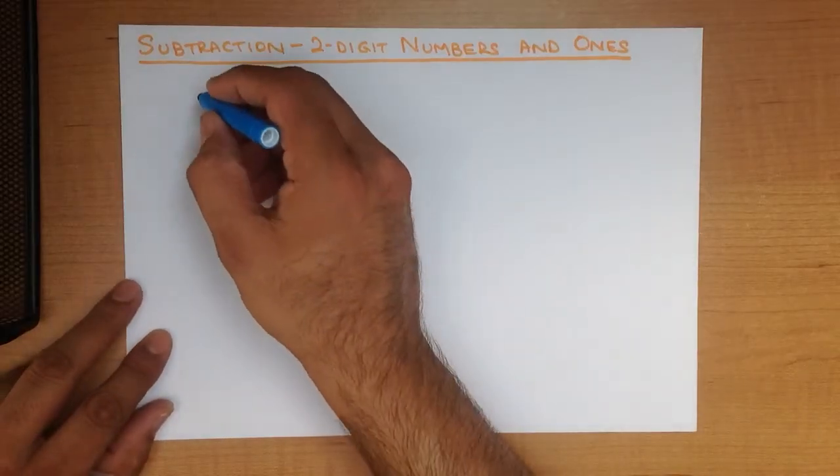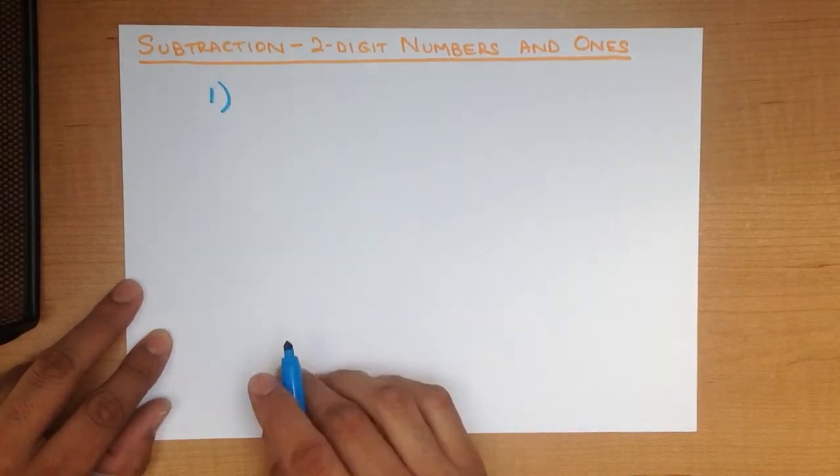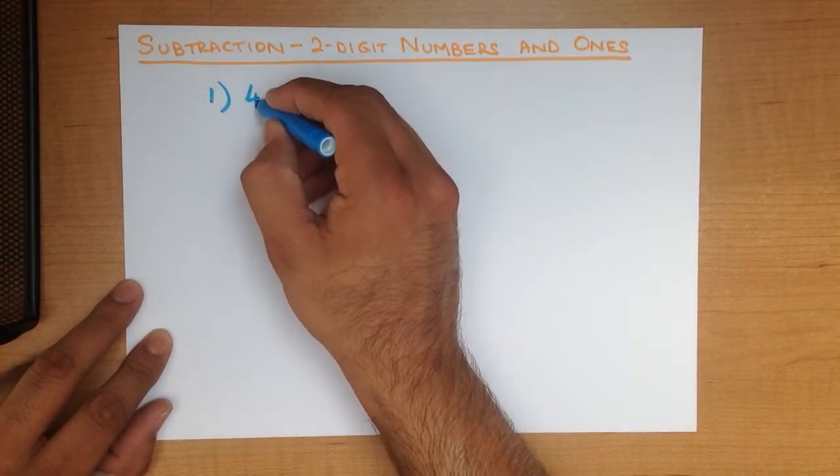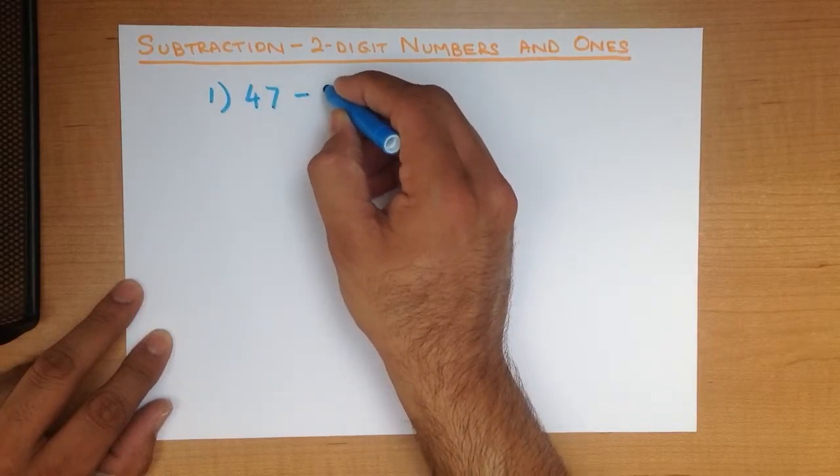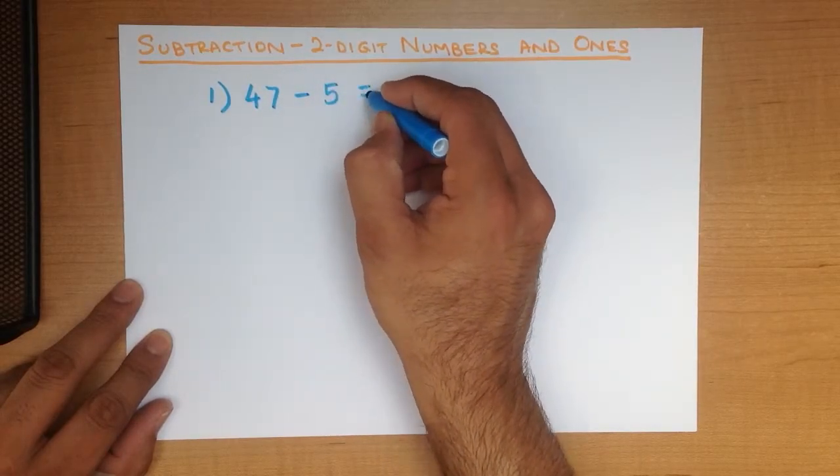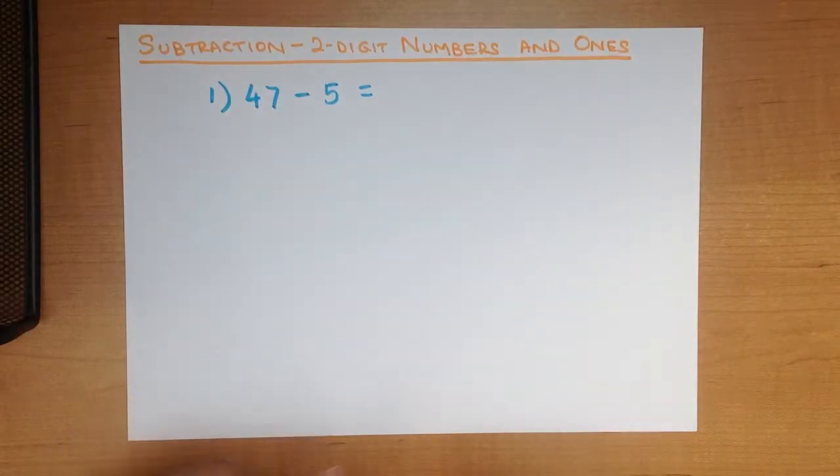Let's start with a simple example. What is 47 minus 5?